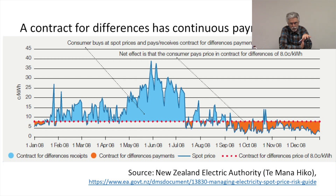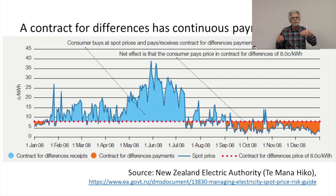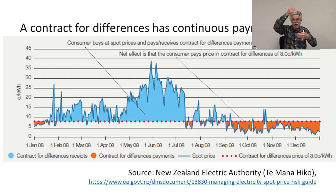This turned out to be a really good bargain, because a little later that year it stopped raining in New Zealand. Since a substantial share of New Zealand's electricity is generated with hydropower, the price of electricity went through the roof. If the firm hadn't had the contract for difference, it would have been paying very high rates for electricity. But instead, when the firm paid for its electricity at the current rates, the utility — the counterparty to the contract — had to pay the difference between $0.08 per kilowatt hour and the actual price paid, so the firm was only out $0.08.